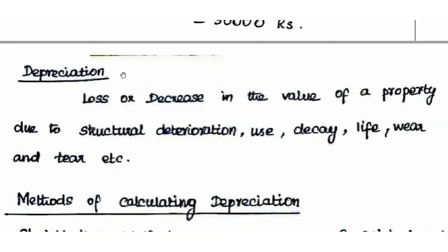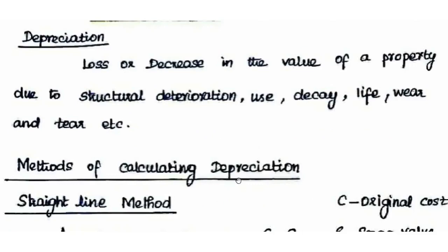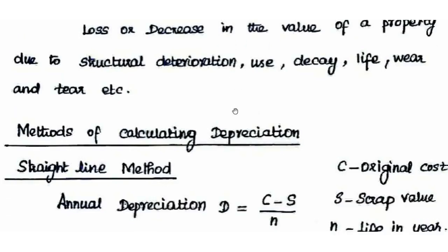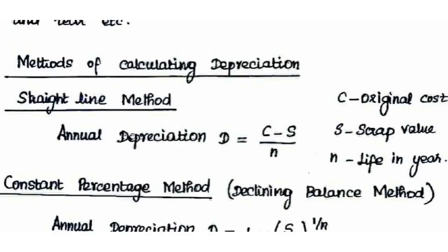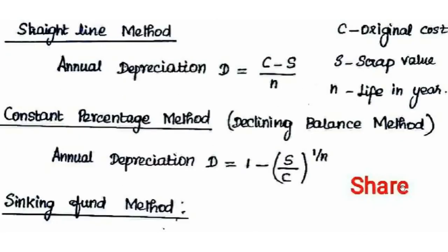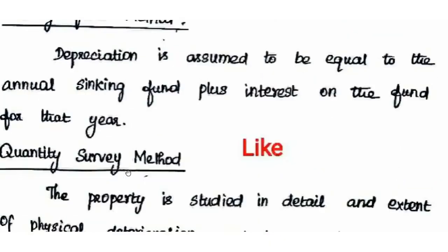Depreciation is calculated on a straight line basis. Depreciation is the decrease in value of property due to structural deterioration, use, decay, wear and tear. Methods of calculating depreciation include: Straight Line Method, Constant Percentage Method or Declining Balance Method, Sinking Fund Method, and Quantity Survey Method.